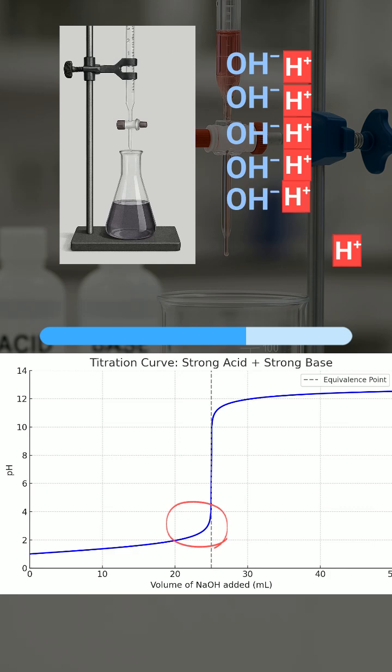Now, adding just a tiny bit more base causes a large change in pH. The curve rises very sharply near the equivalence point. The solution is rapidly switching from acidic to neutral.